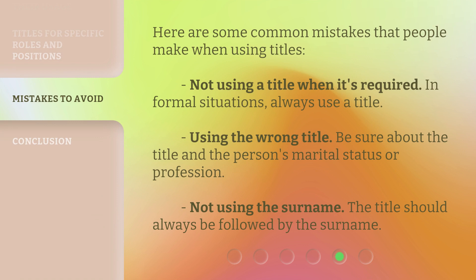Here are some common mistakes that people make when using titles. First, not using a title when it's required — in formal situations, always use a title. Second, using the wrong title — be sure about the title and the person's marital status or profession. Third, not using the surname — the title should always be followed by the surname.